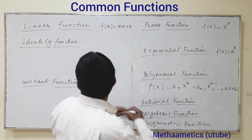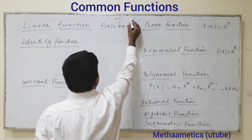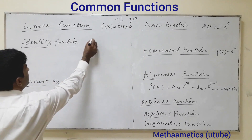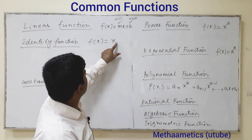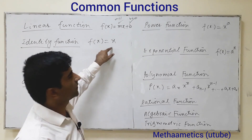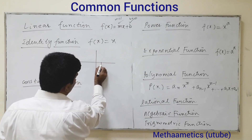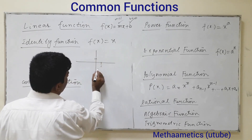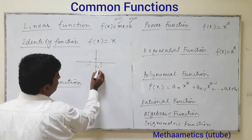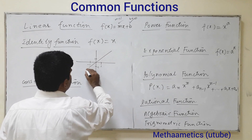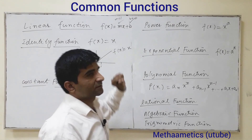If in a linear function b equals 0 and m equals 1, this becomes the identity function, meaning f(x) equals x. Whatever value of the domain we substitute, we get that same value as the range. The identity function has the same value on both axes — if we input 1, we get 1 on the y-axis; if we input minus 1, we get minus 1. Its graph is always a straight line.